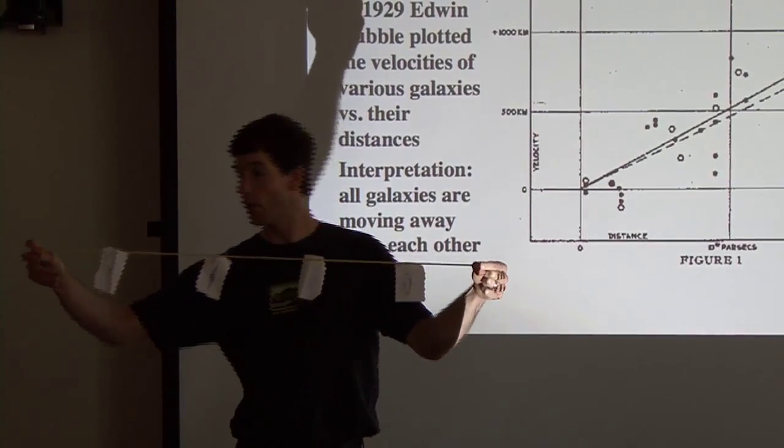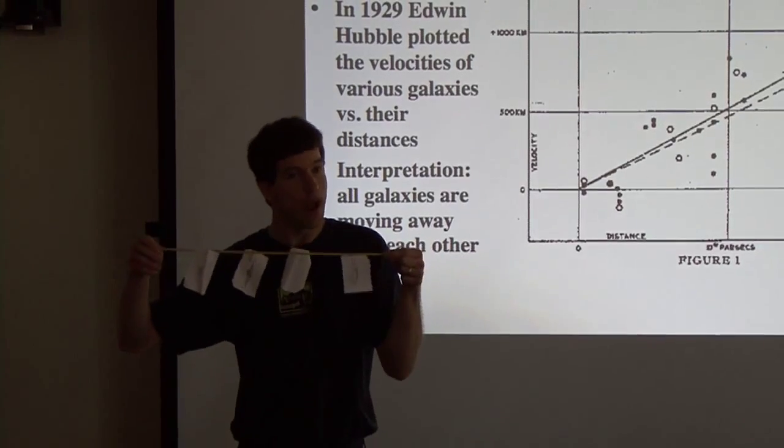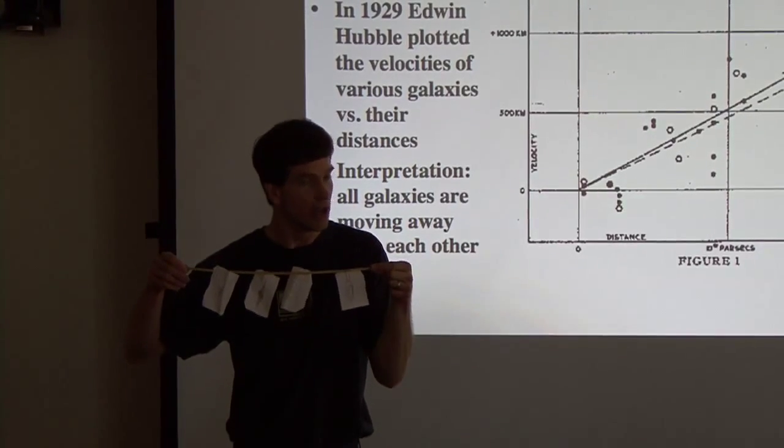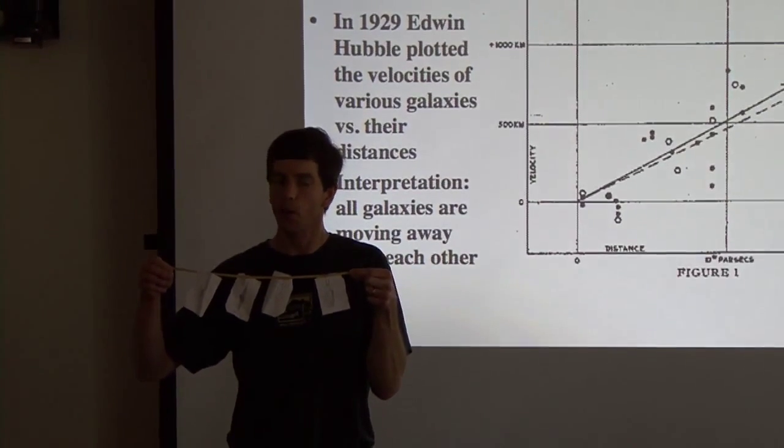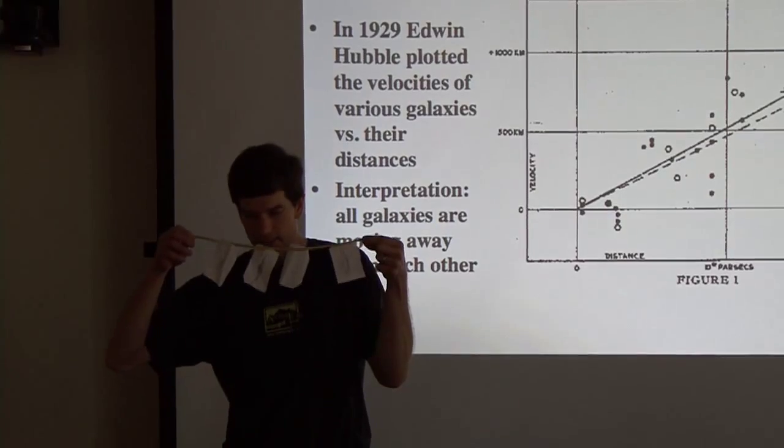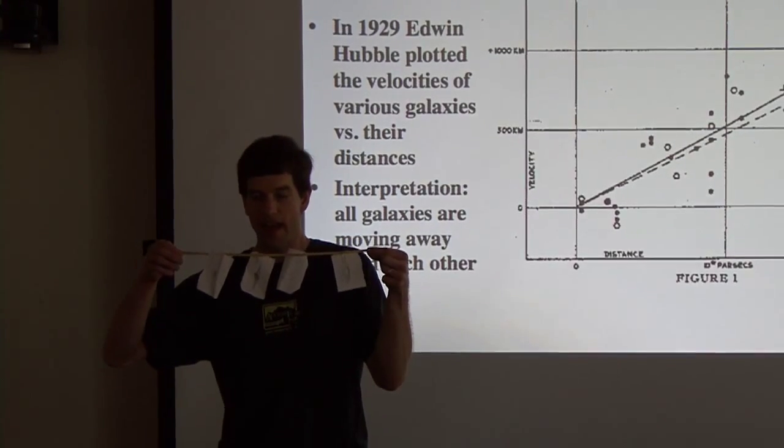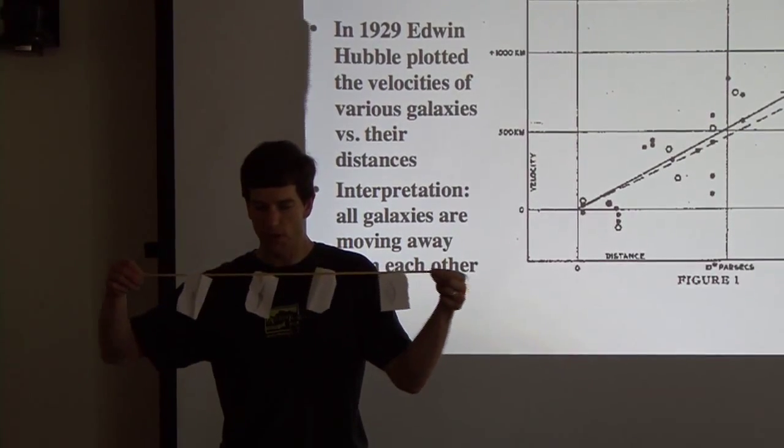Yeah, it's that one way over here. That guy is moving away from us the fastest. Right. The ones which are farther away are moving away faster. But what if we lived somewhere else? What if we lived in a different galaxy like this one? Okay. Then as the universe expands, which one's moving away fastest?